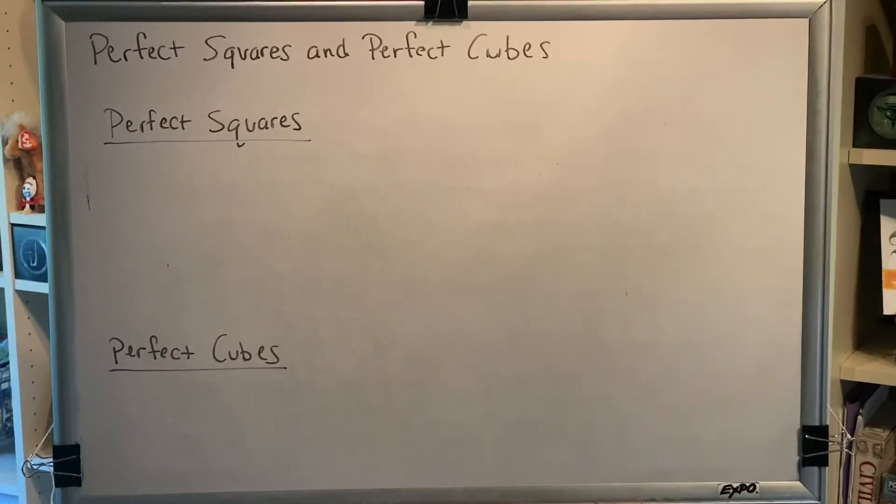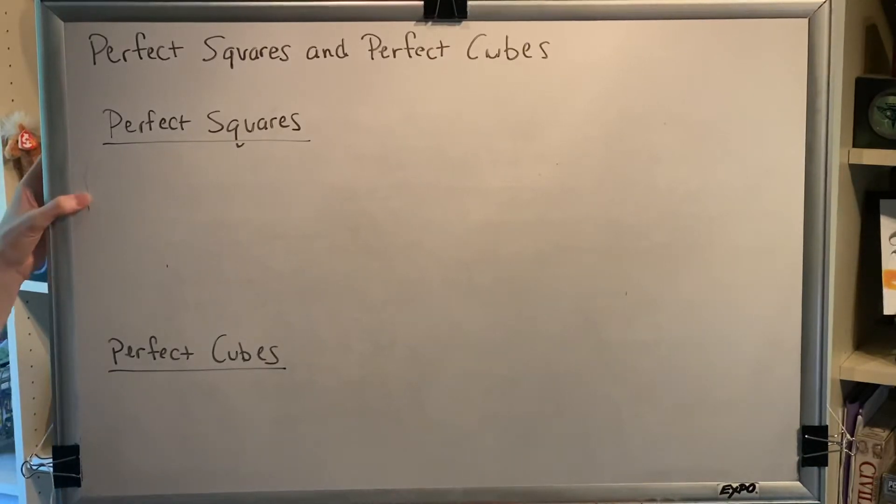The topic of this video is perfect squares and perfect cubes. Perfect squares are obtained by taking numbers and multiplying them by themselves. Perfect cubes are obtained by taking numbers and multiplying them by themselves a total of three times.